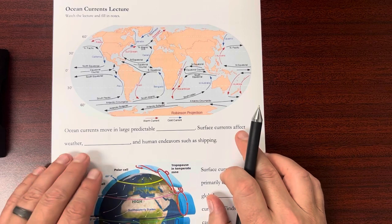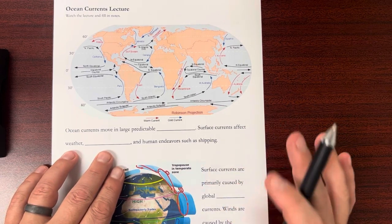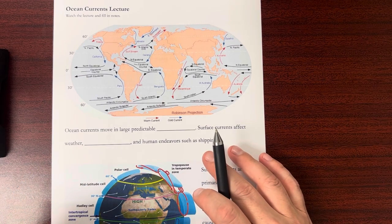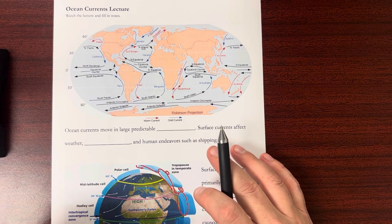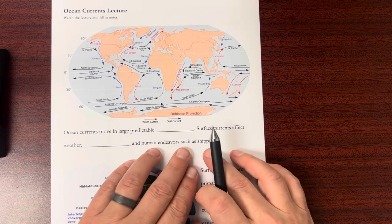So weather and climate are affected regularly by these ocean currents. But so it's just about anything that we do as humans that involve any kind of travel or moving things around the globe. Shipping is just one example.